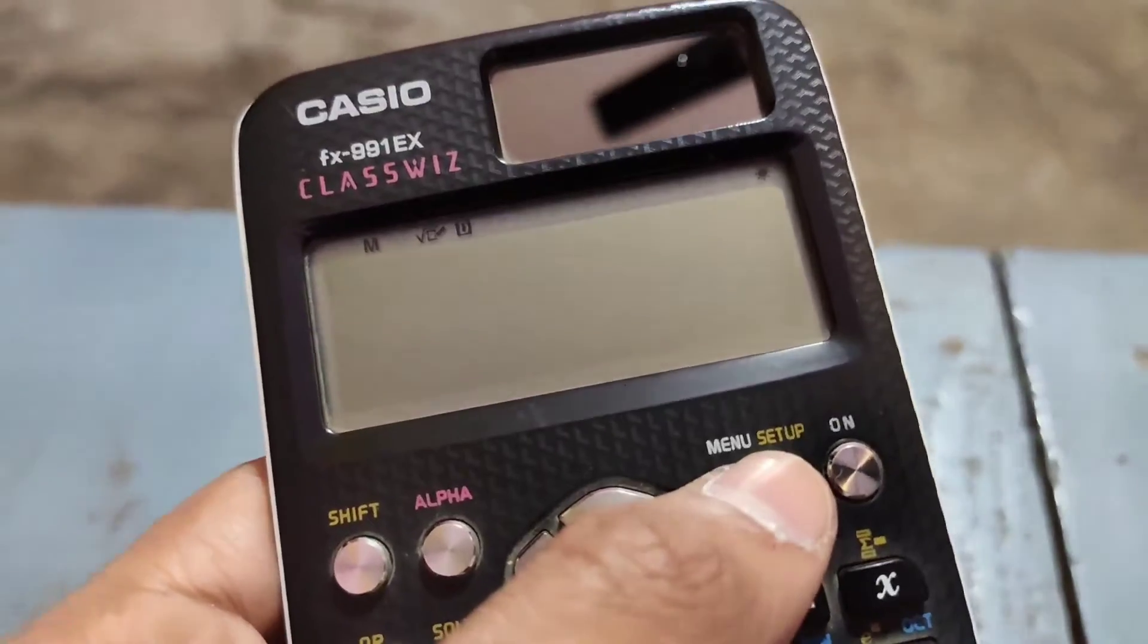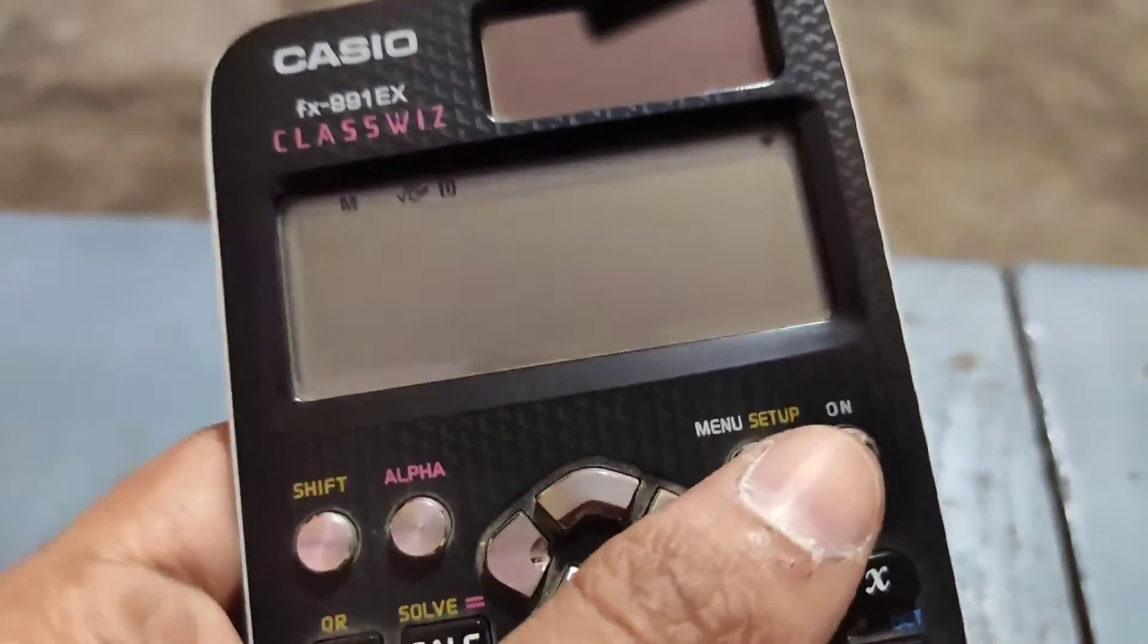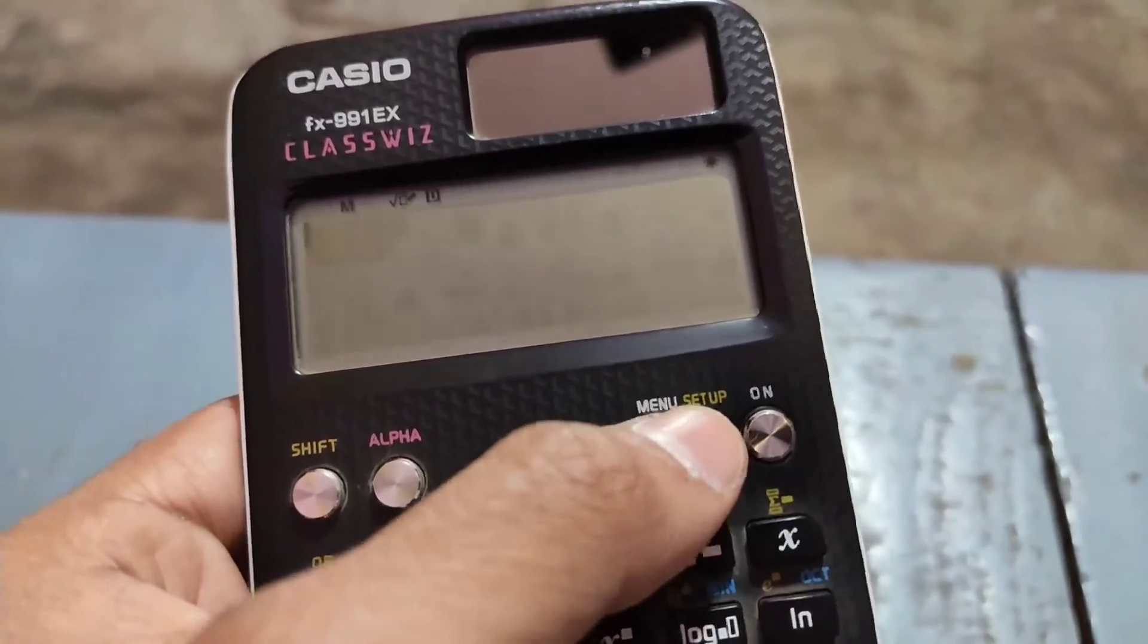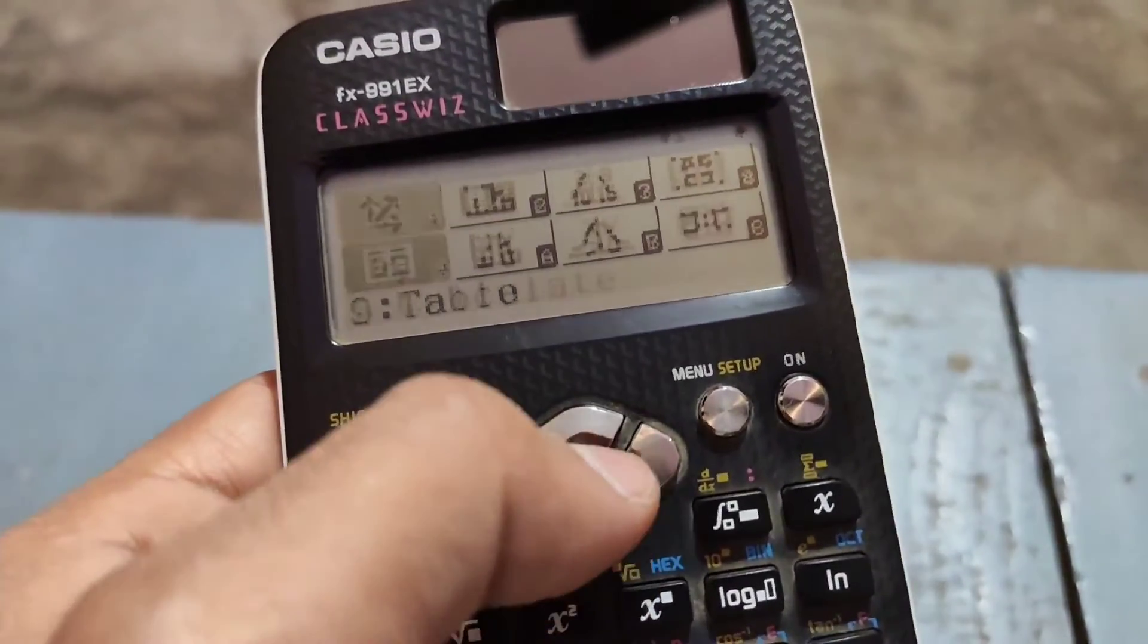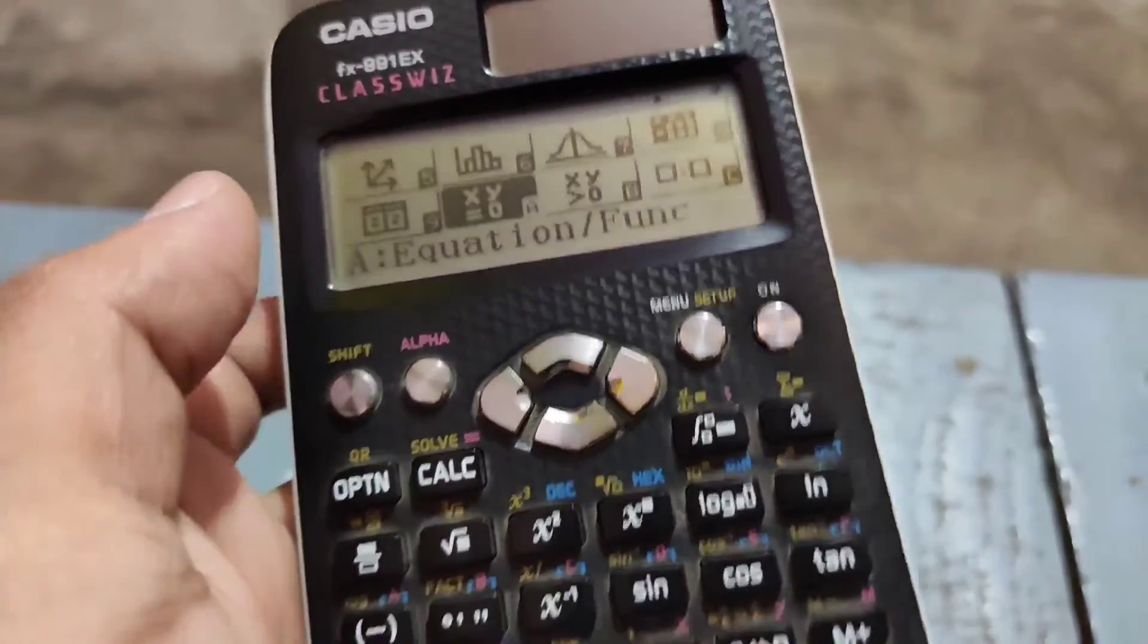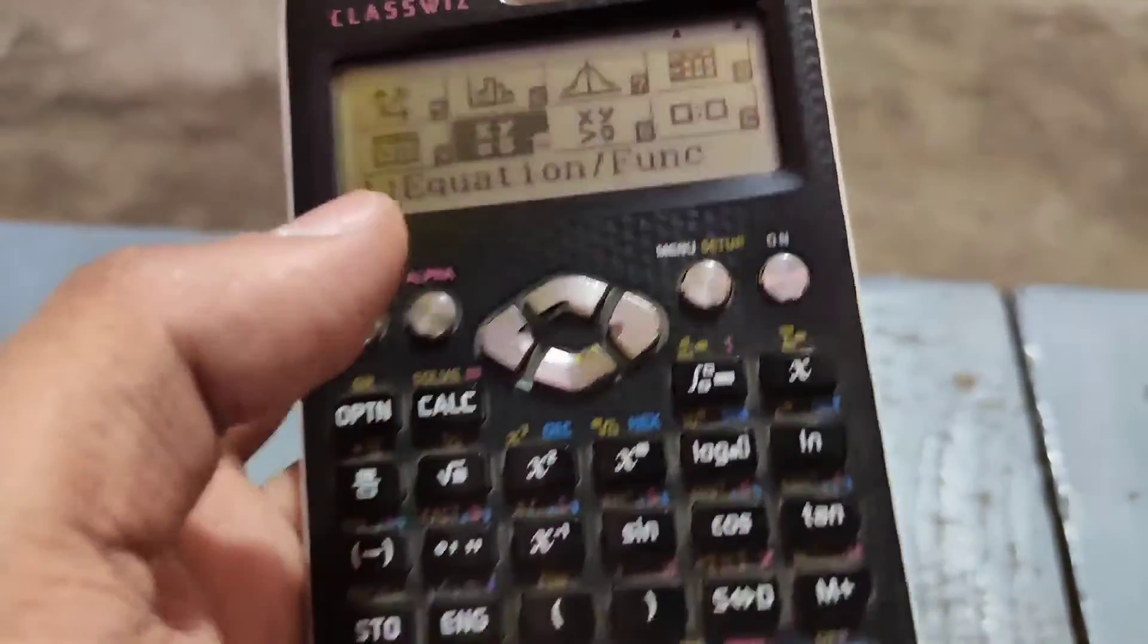To solve this, we have to select the equation mode. We press the menu button, go down, and select the equation option by pressing A, because it is showing A.